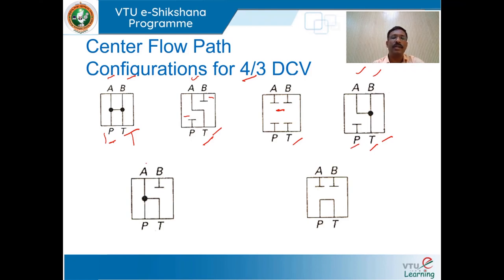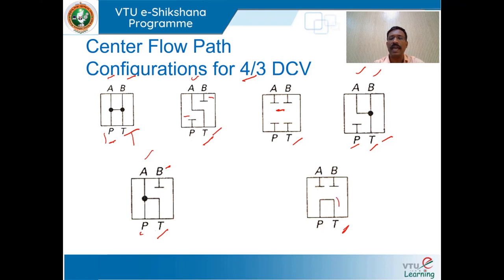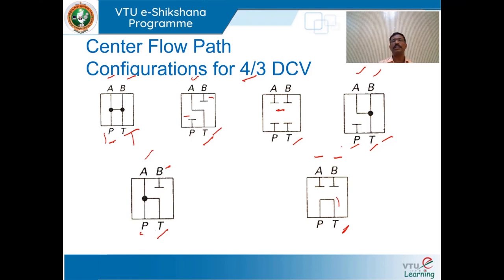Another configuration has A and P open to tank but port B is blocked. The last is the tandem type center flow path configuration, where P is open to tank and ports A and B are closed. These are the six different center flow path configurations for a 4-way 3-position directional control valve.